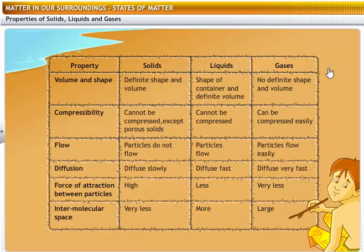Gases have no definite shape and volume, can be compressed easily, particles flow easily, diffuse very fast, very less force of attraction between particles, large intermolecular space.